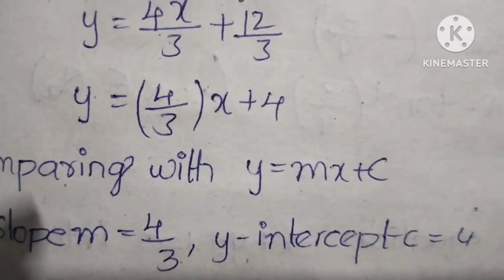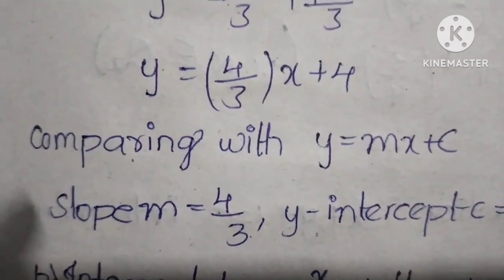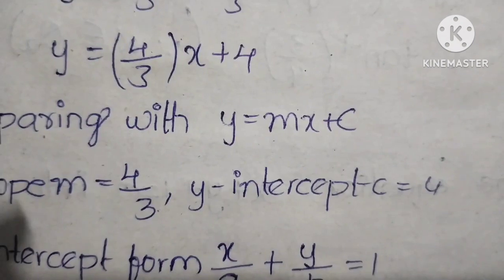Comparing with y equals mx plus c, the slope m equals 4 by 3, and the y-intercept equals 4.